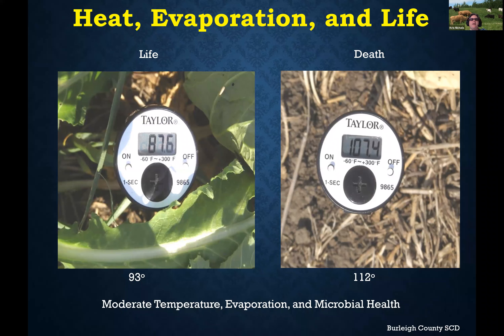At those higher temperatures in bare soil, you actually end up getting more microbial death. Maximum activity can happen around 85 to 90 degrees Fahrenheit, but as you get to about 110 degrees, you're starting to see microbial death. So you're not going to have that level of activity you're looking for. The other thing we're looking for is improved nutrient use efficiency — having the microbial communities absorbing, fixing, and converting nutrients into a plant-available form.